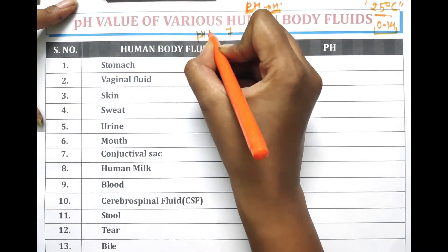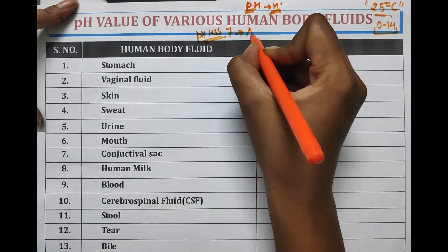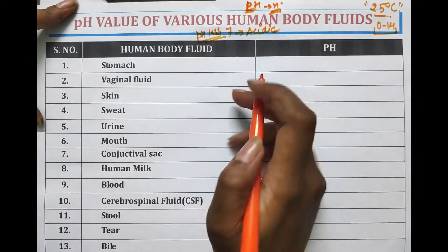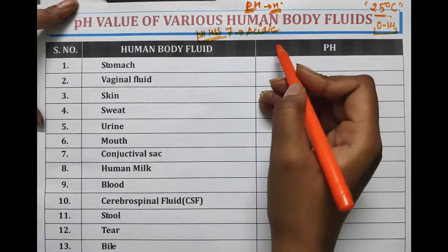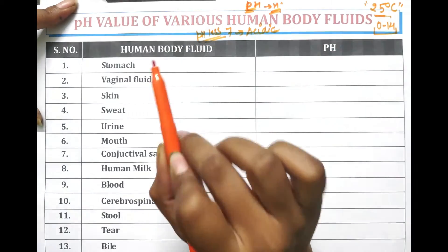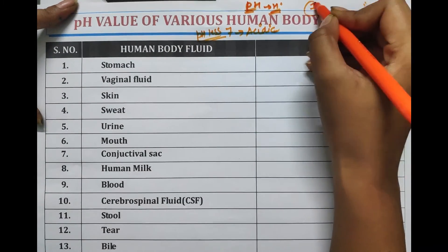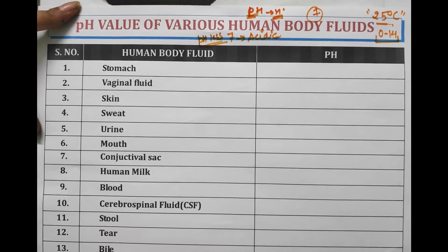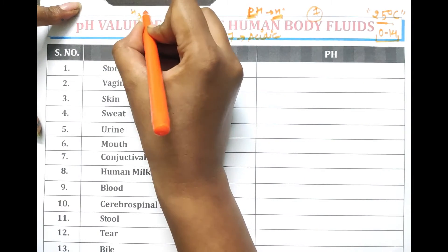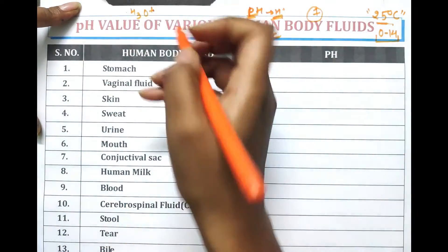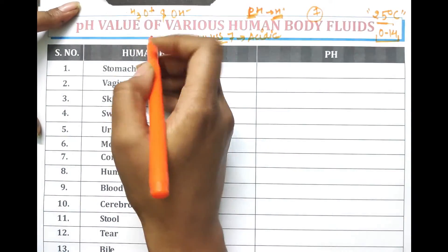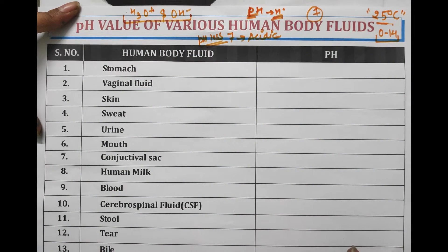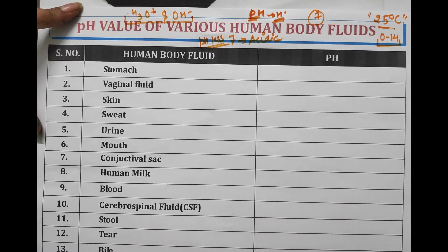Substances or aqueous solutions at pH more than 7 are basic, while those with pH 7 at 25 degrees Celsius are considered neutral. Why are they considered neutral? Because the concentration of hydrogen, hydronium ions and hydroxide ions in pure water become equal, so water is considered as neutral.